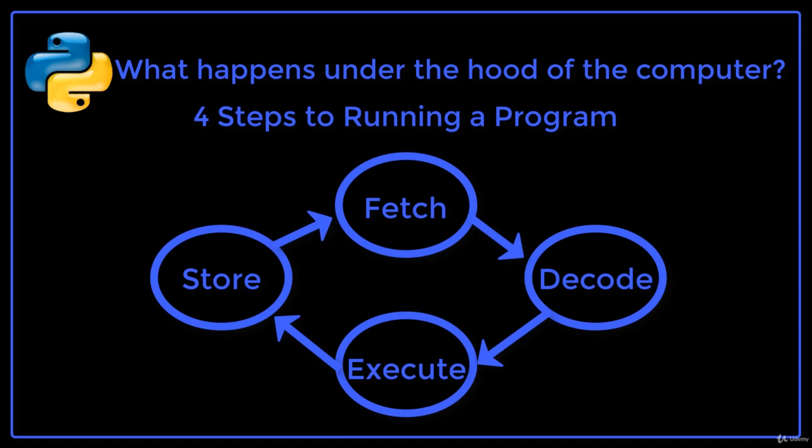To run a program, there is a cycle of four steps. The computer fetches the next instruction from the RAM. Then it decodes what it has to do. It looks at the instruction and sees exactly what it is being asked to do. Then the instruction is executed, meaning that the task is carried out.